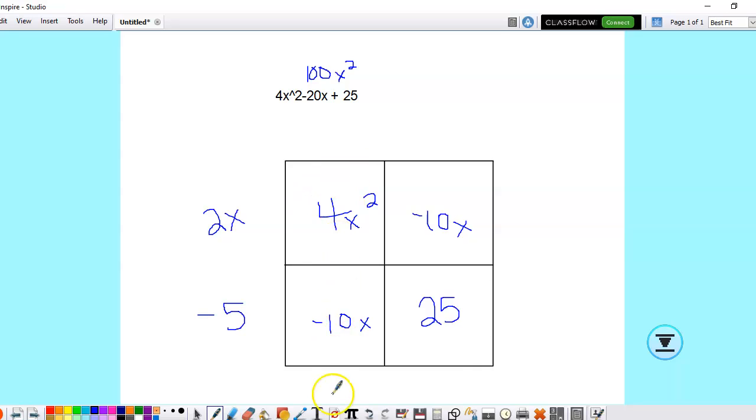And then you do the same thing up here. So it's basically going to be the same thing because you've got the same thing on the corners here. So GCF between 4x squared and negative 10x would be 2x. And the GCF between negative 10x and positive 25 would be negative 5.